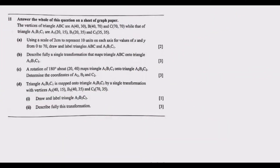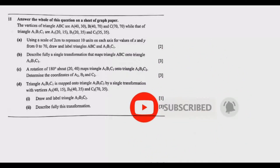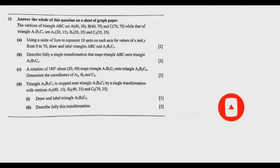Welcome to episode 11, in which we are looking at question 11 from the 2021 GCE mathematics paper 2. The question is from transformation. Answer this question on a sheet of graph paper. The vertices of triangle ABC are A(40,30), B(40,70), C(70,70), while those of triangle A1B1C1 are A1(20,15), B1(20,35), C1(35,35). Using a scale of 2 centimeters to represent 10 units on each axis, for values of x and y from 0 to 70, draw and label triangles ABC and A1B1C1.